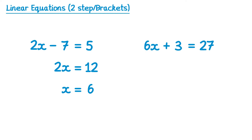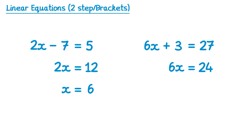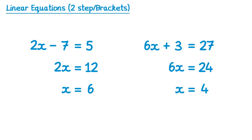Let's try another example. We're going to deal with the plus 3 first. The inverse of plus 3 is subtract 3, so we're going to subtract 3 from both sides. On the left hand side the plus 3 and subtract 3 cancel, so we just have 6x, and on the right hand side 27 take away 3 is 24. Now we can deal with this 6 — 6x means 6 multiplied by x, so we divide by 6 on both sides. 6x divided by 6 is x, and 24 divided by 6 is 4. So the solution is x equals 4.